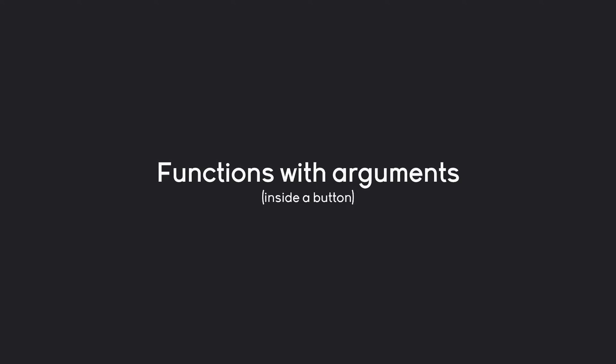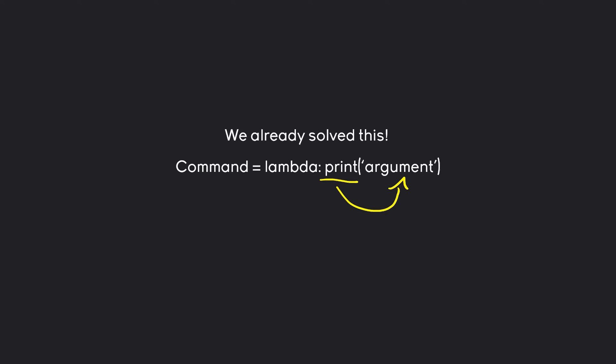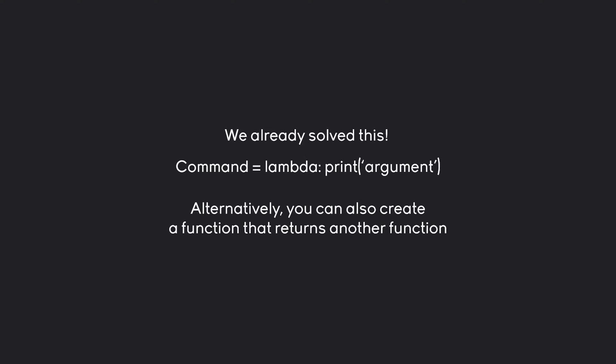There's one more topic I want to cover and that's going to be a shorter one. That is functions with arguments inside of a button. The keen-eyed among you might have seen we have already fixed all of this, because when we called the print function, we literally called a function with an argument. This one was only executed when we are actually pressing the button, which means with this lambda here, we can call functions with arguments inside. It's literally as simple as that. Although alternatively, you could also create a function that returns another function and have arguments via that. So let's explore both of those.